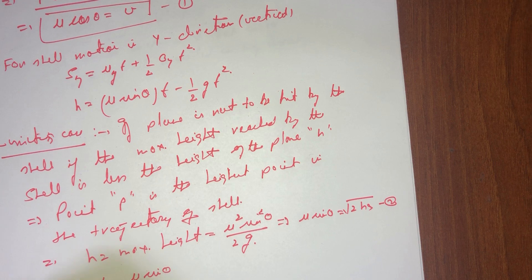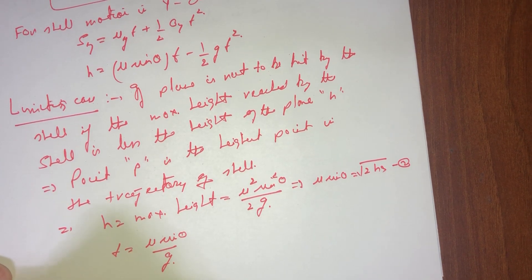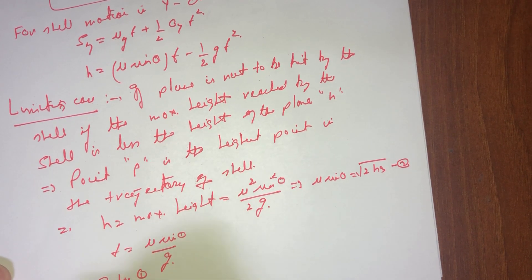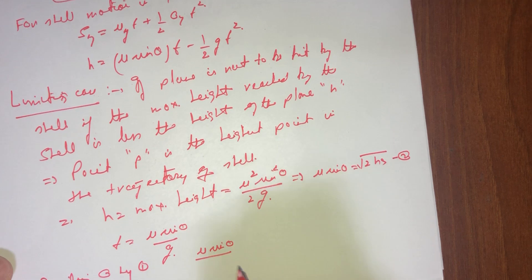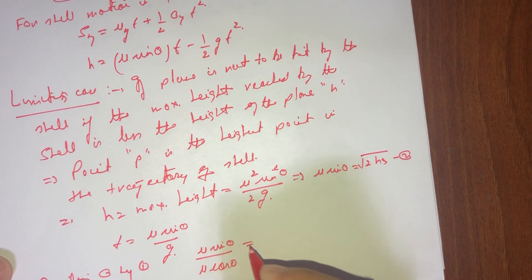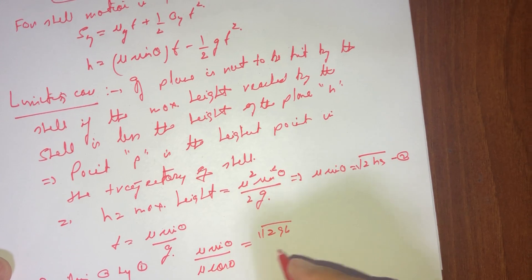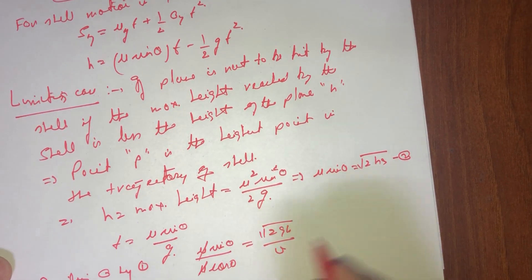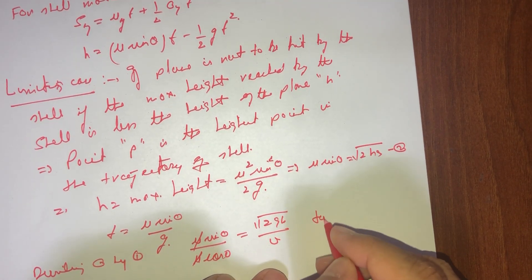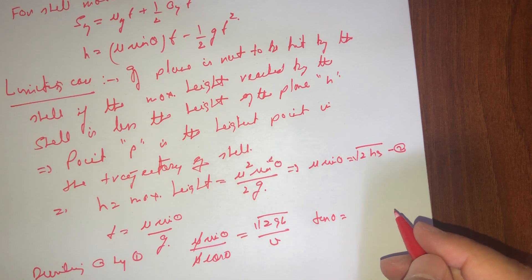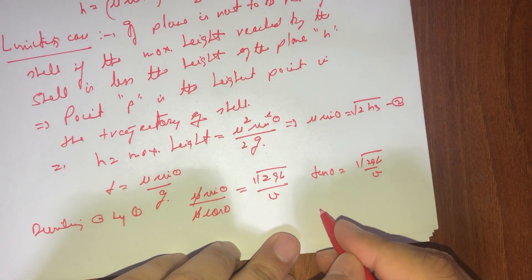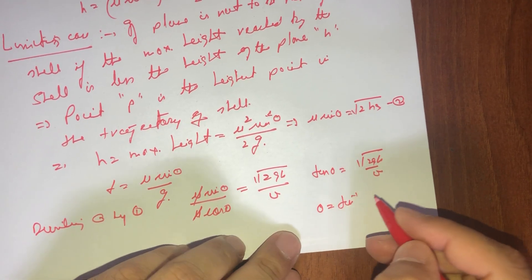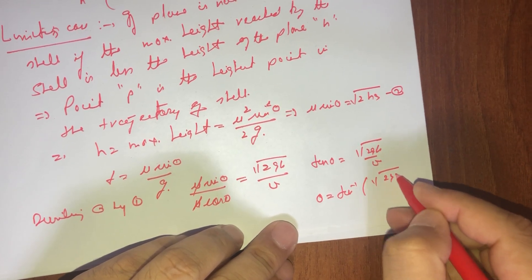So dividing equation two by equation one, we get: u·sinθ divided by u·cosθ equals √(2gh) divided by v. This gives tanθ = √(2gh) / v, or we can say that θ = tan⁻¹(√(2gh) / v).